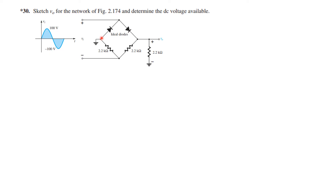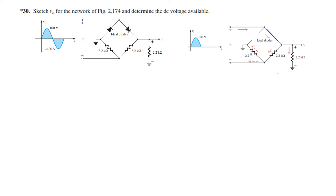Looking at this circuit for the first half cycle — positive at the top and negative at the bottom — this diode will become forward biased and the other will become reverse biased. We show forward bias as a short circuit and reverse bias as an open circuit. The current has two paths, one on the right and one on the left, so let's redraw this circuit.